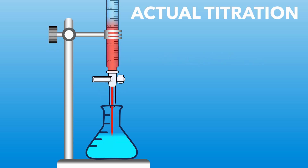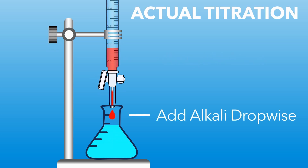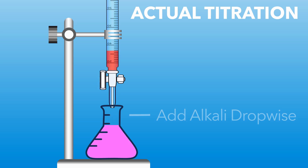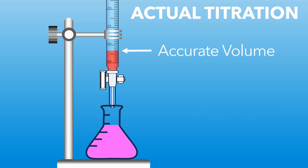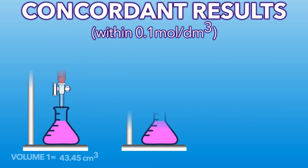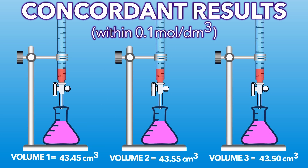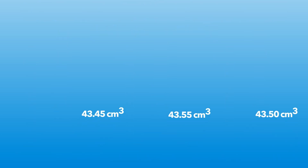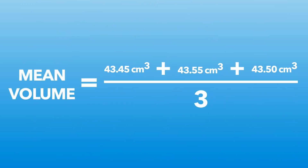This time we stop short of neutralisation and then add the alkali drop by drop until it turns pink. This improves the accuracy for the final volume. When we get several similar results within 0.1cm³, we take a mean volume for our final calculation.